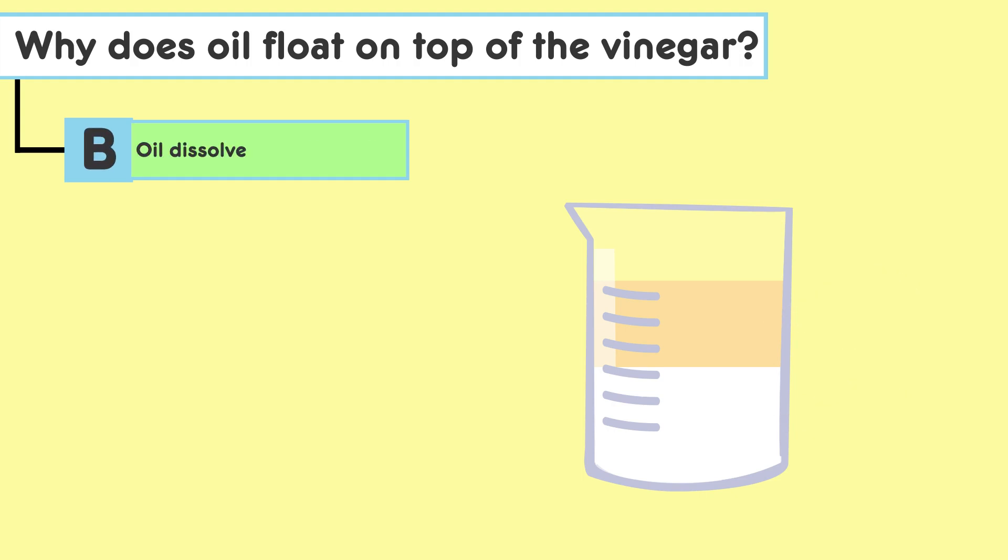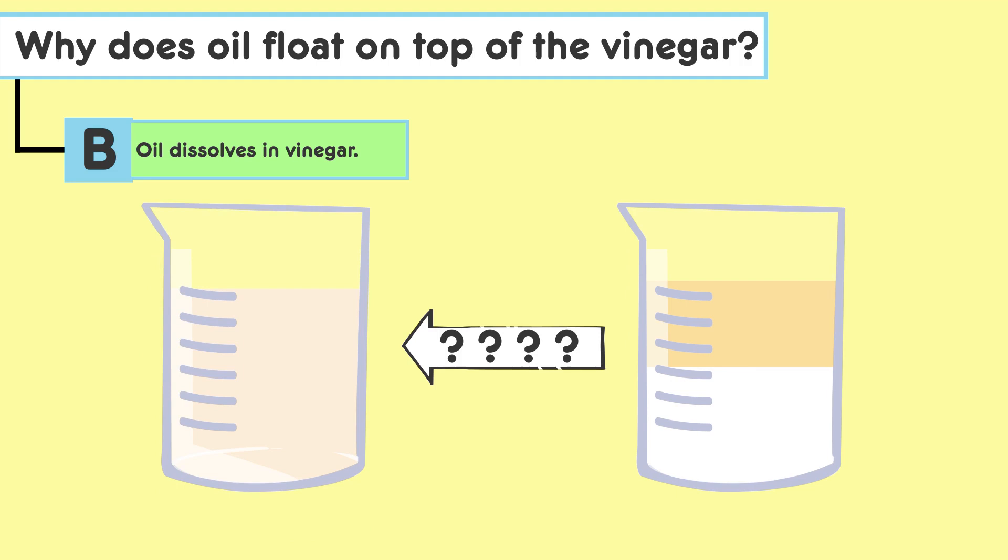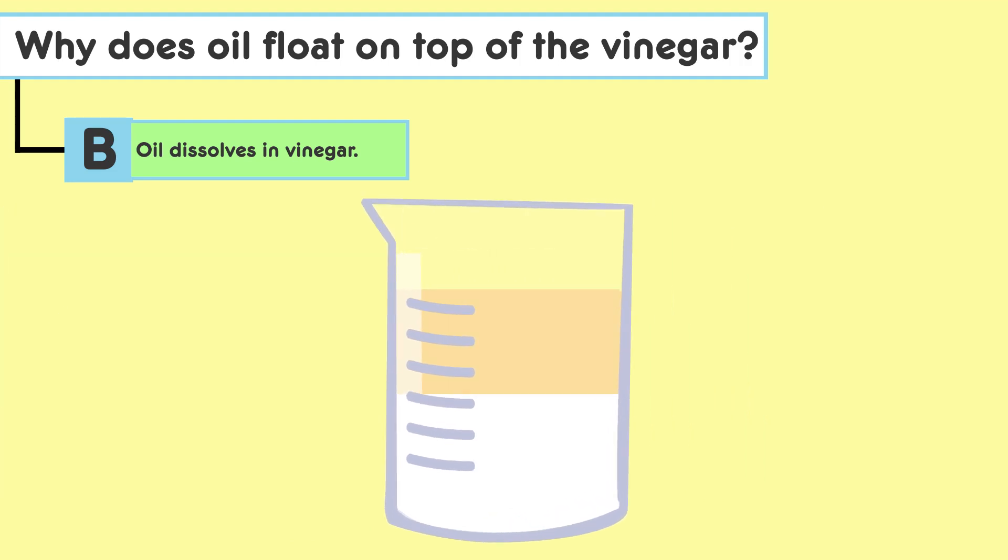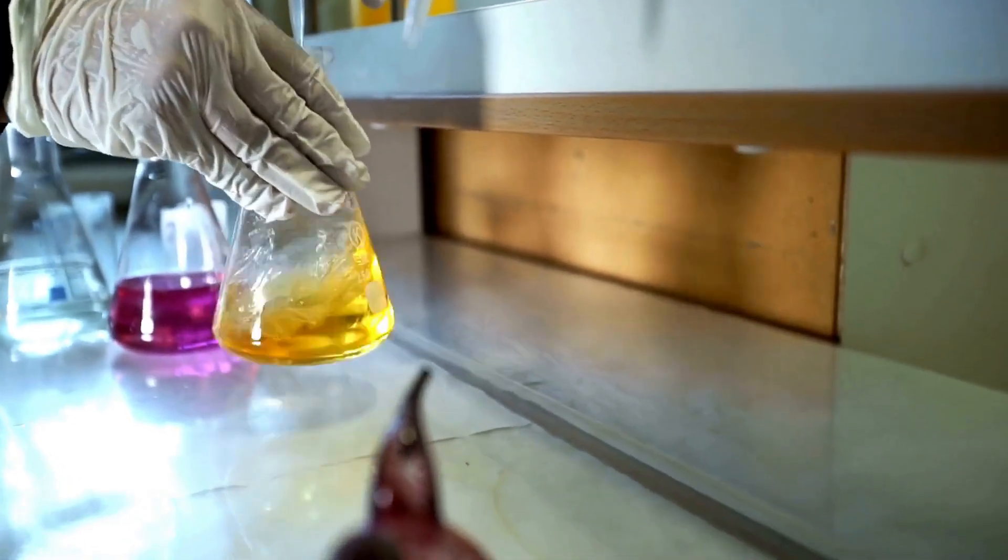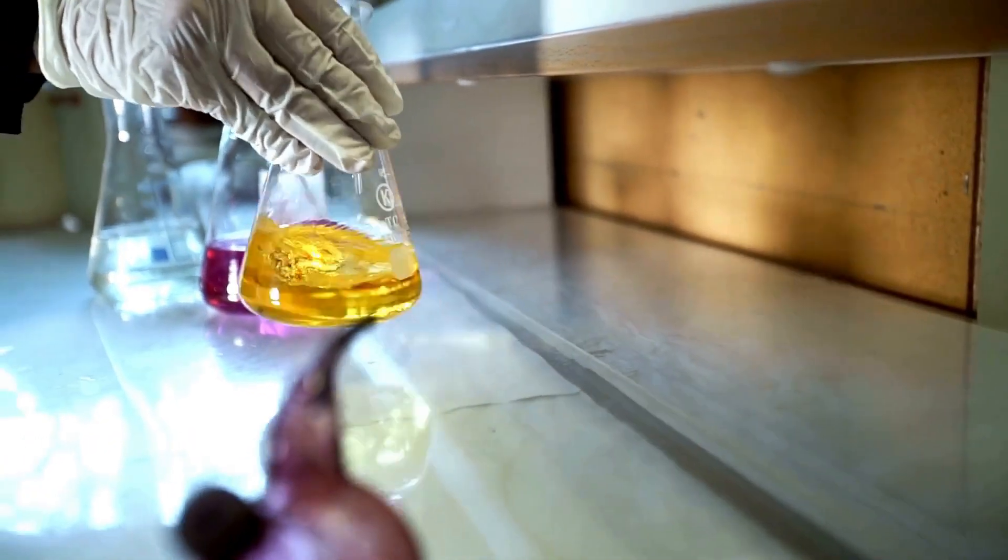B. Oil dissolves in vinegar. So let's investigate. Check if oil and vinegar mix uniformly. Now let's analyze. Determine if true dissolution occurs between oil and vinegar. Here's a tip. Miscibility indicates whether two liquids can form a homogeneous mixture.